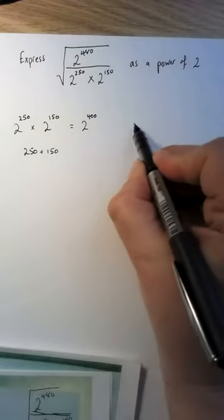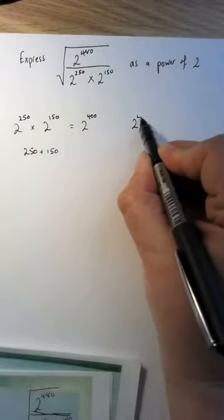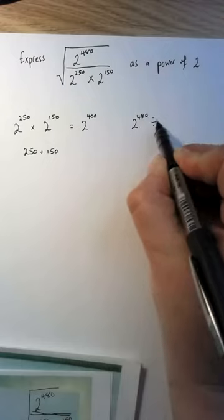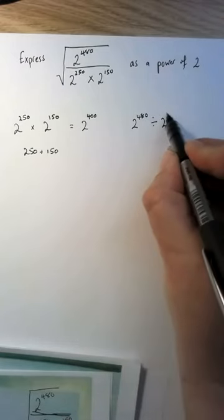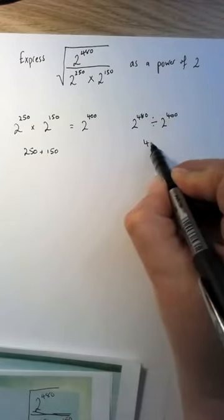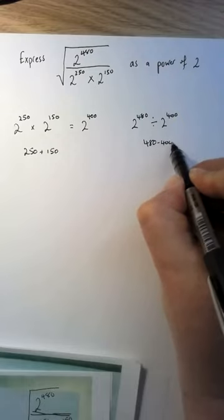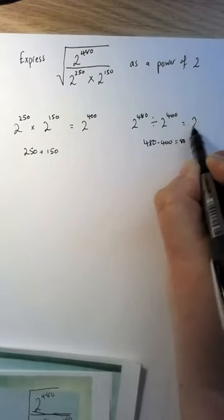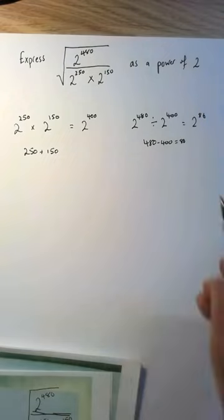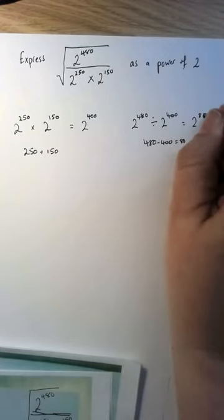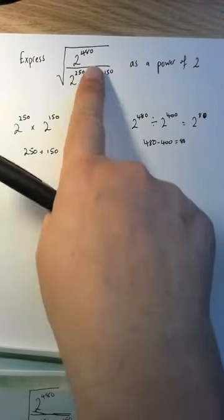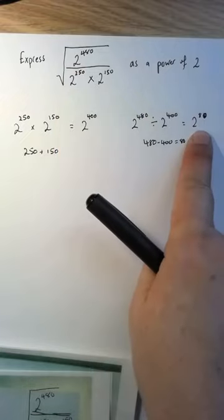What we've got here in the inside is 2 to the power of 480 divided by 2 to the power of 400, which we know is 480 subtract 400, 2 to the power of 80. So now we've reduced everything in here just to 2 to the 80.